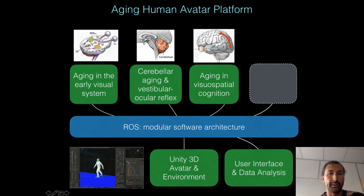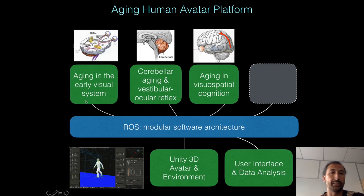ROS serves to pass messages between modules, and in the avatar platform it passes messages in the form of spike trains. For example, a retinal module simulating spiking activity of retinal ganglion cells can pass that spiking activity as a message to another module, such as a visual spatial orientation module, which drives cells in the brain responsible for spatial orientation.